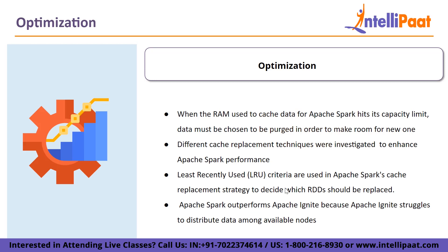Many researchers have found that Apache Spark outperforms Apache Ignite because Apache Ignite struggles to distribute data among the available nodes. Apache Ignite is a high-performance distributed in-memory computing platform for large-scale data sets that has a cache management feature and keeps data in RAM as much as possible, having minimum interaction with disk.